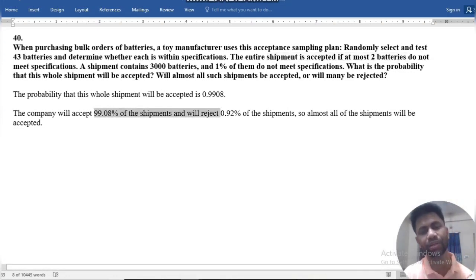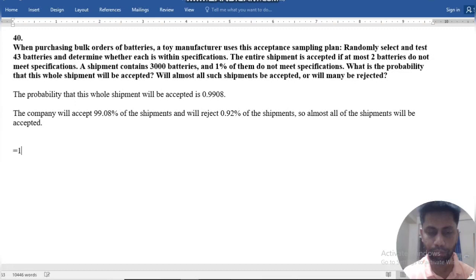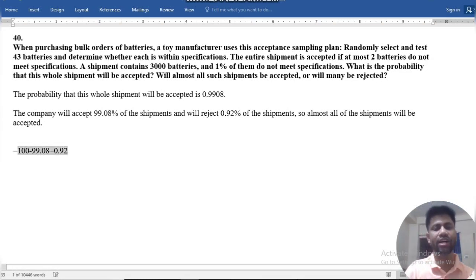If the shipment will be rejected, that means 1 minus 0.9908 is equal to 0.0092. This is the answer.